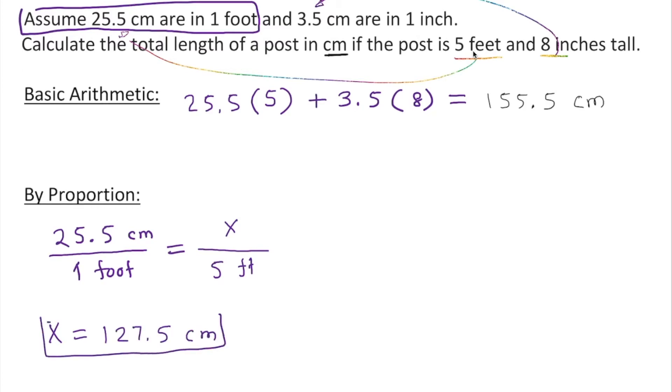There is another piece of information, which is 3.5 centimeters. That will give us 3.5 centimeters over 1 inch equals x over 8 inches. Remember, when we work with proportion, we must match the unit top to top, bottom to bottom. In other words, whatever's in the numerator must match, whatever's in the denominator must match - inch to inch.